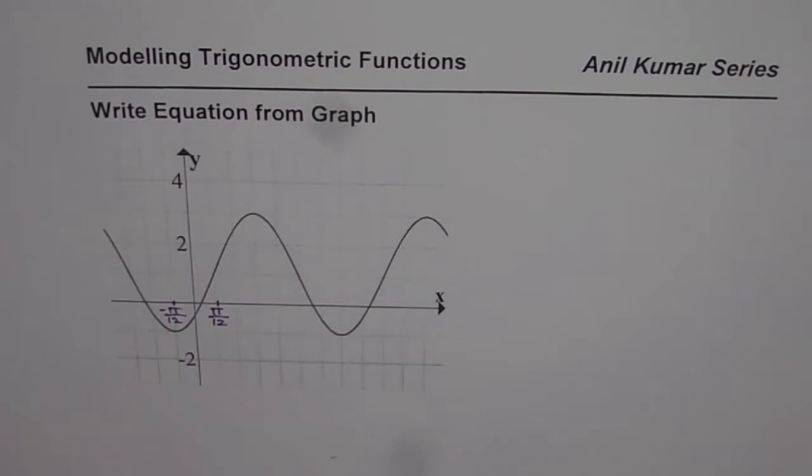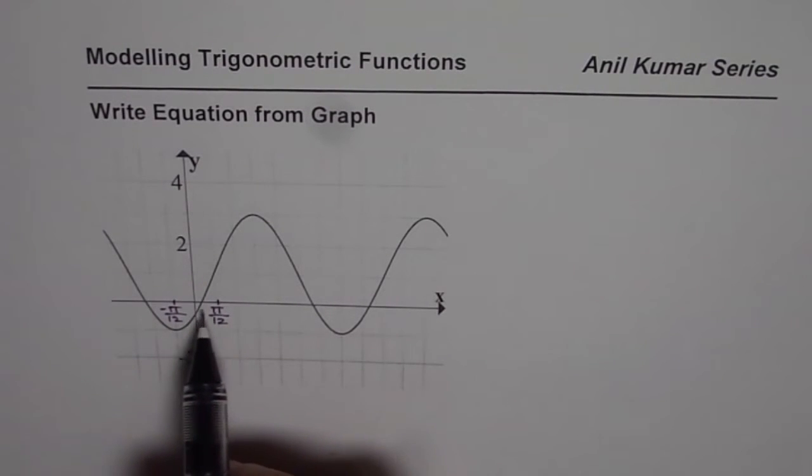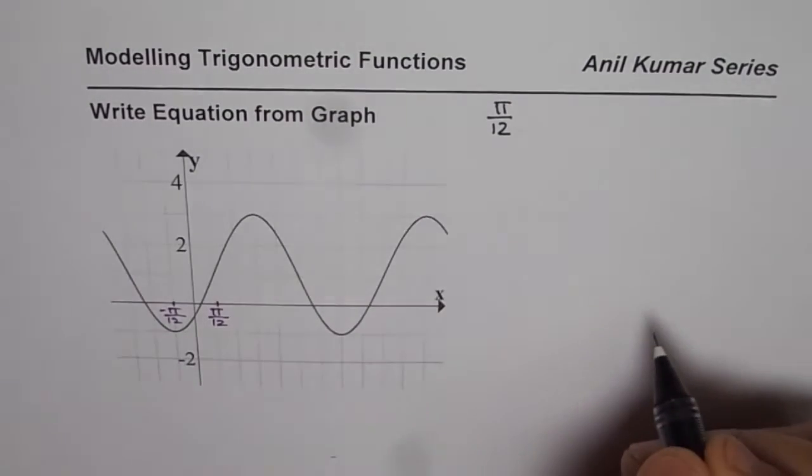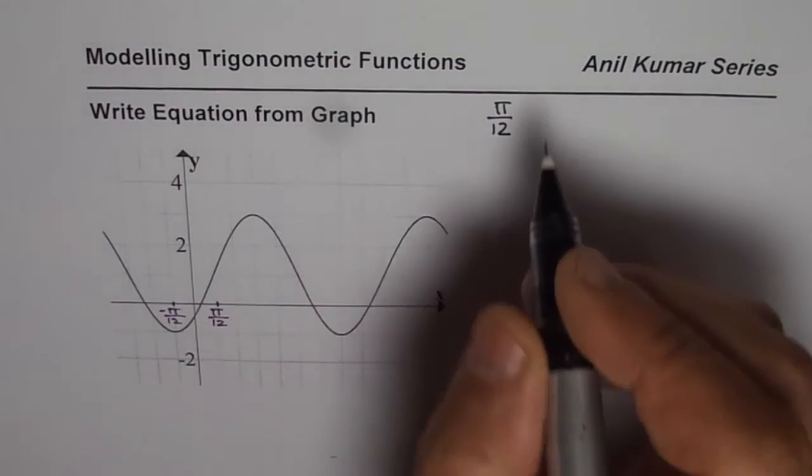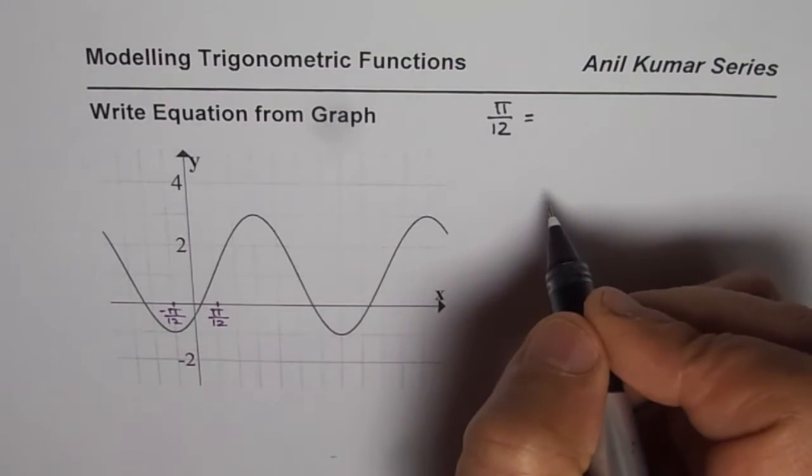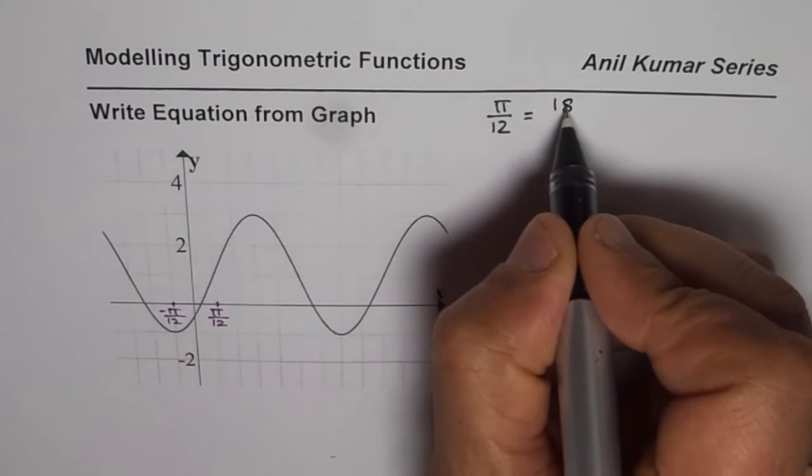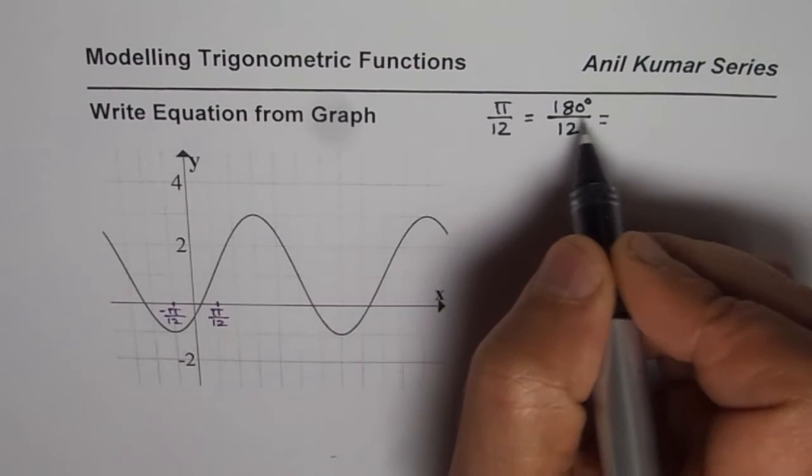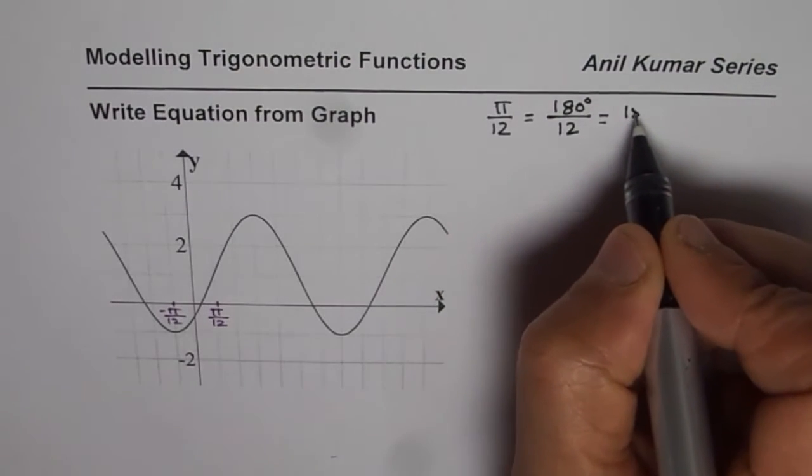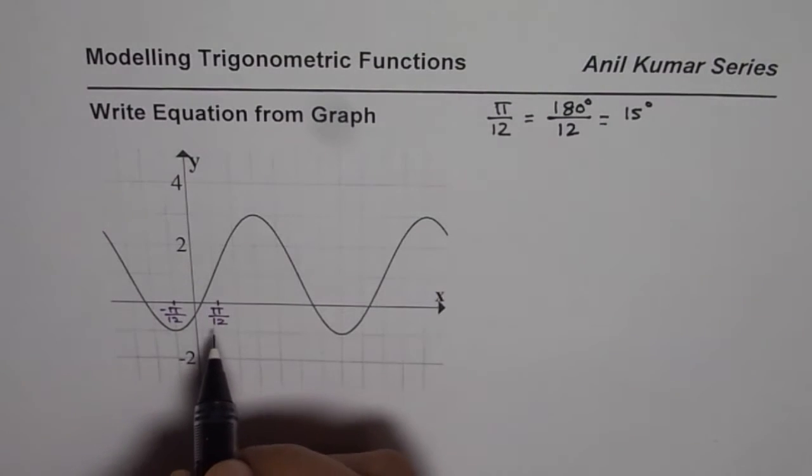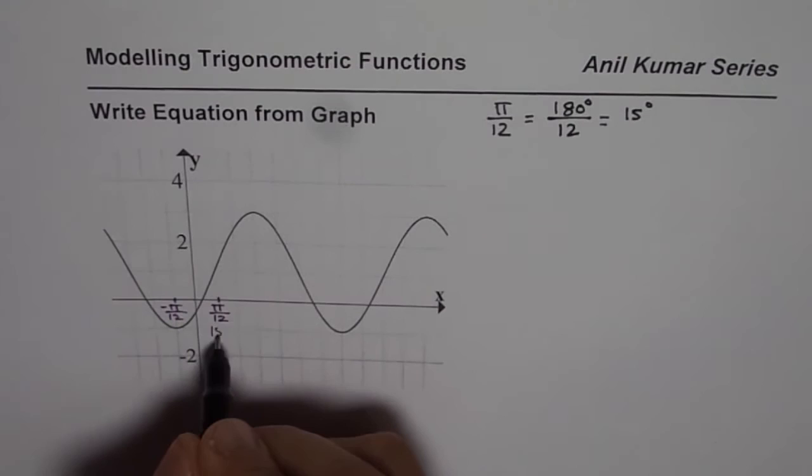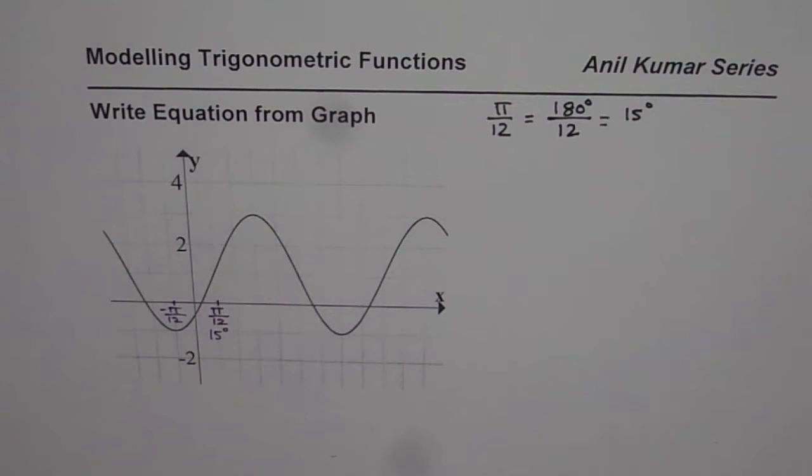One more thing which I need to discuss with you is that each division horizontally is π/12. Now those of you who are not conversant with radians can actually convert this radian measurement into degrees. π is 180 degrees, so you can write this as 180 degrees divided by 12. When you divide 180 by 12 you will get 15 degrees. So you can also write this as 15 degrees and then find the equation of this graph in terms of sine and cosine.